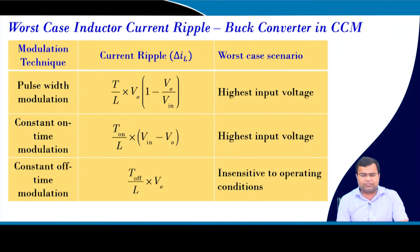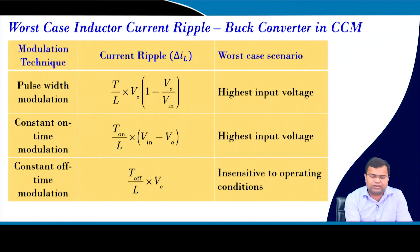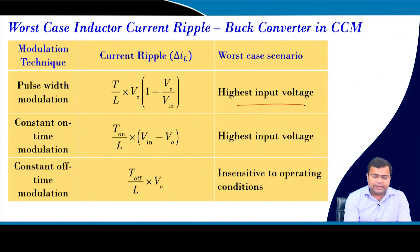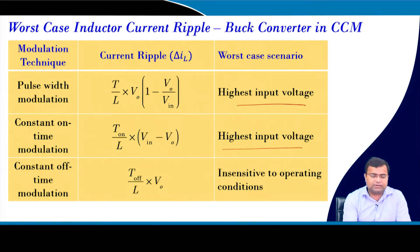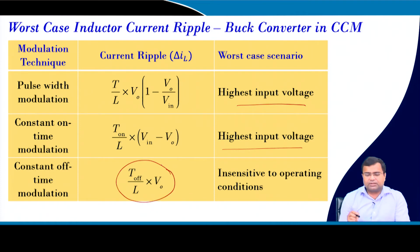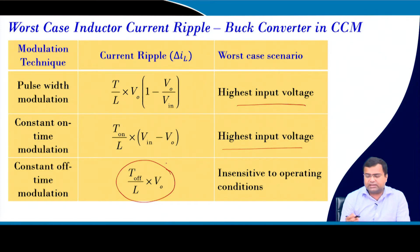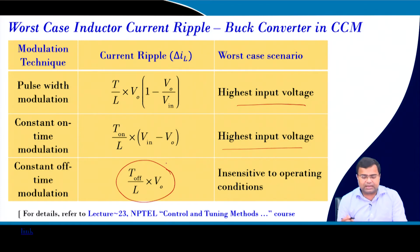The worst-case current ripple for the buck converter under pulse width modulation occurs at the highest input voltage. Under constant on-time it is also highest at the highest input voltage. Under constant off-time, the ripple is independent of input voltage — i.e., insensitive — as discussed in lecture 23 of the earlier course.